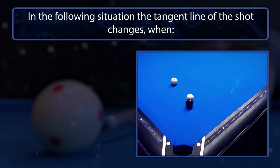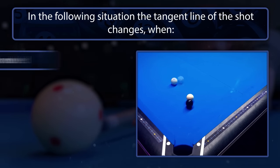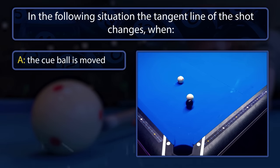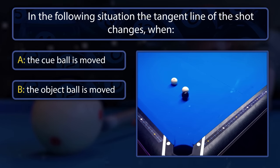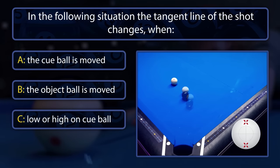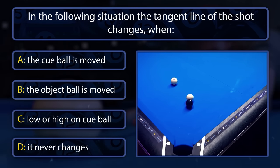In the following situation, the tangent line of the shot changes when: the cue ball is moved, the object ball is moved, you play low or high on the cue ball, or it never changes.